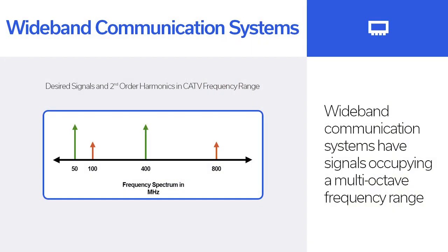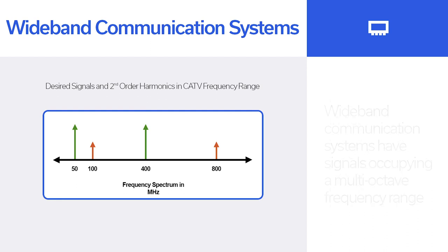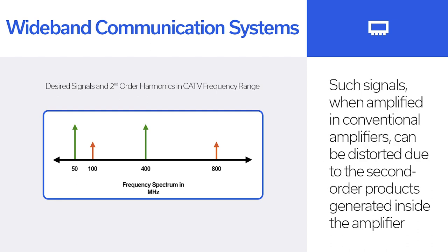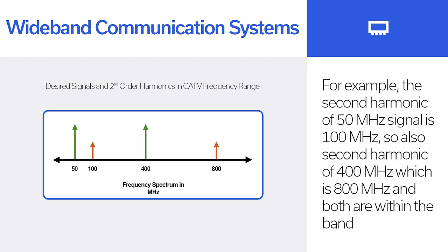The other balun application we will cover in this video is even order harmonic suppression, which is a big deal in wideband cable TV applications — 3 dB higher output power and IP3 than a single device. Wideband communication systems have signals occupying a multi-octave frequency range. For example, CATV signals occupy a 50 to 1000 MHz range, which is more than four octaves. Such signals when amplified in conventional amplifiers can be distorted due to the second order products generated inside the amplifier. For example, the second order harmonic of a 50 MHz signal is 100 MHz, and the second harmonic of 400 MHz is 800 MHz — both are within the band.